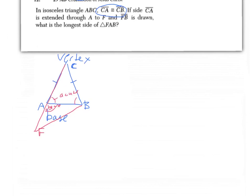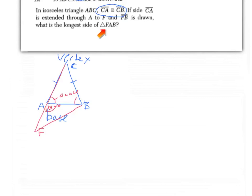That's a tough question because there are no numbers. If you're dealing with an isosceles triangle, the base angles have to be acute — less than 90°. If the base angles are less than 90°, then the angle formed at that extension has to be an obtuse angle. A triangle can't have more than one obtuse angle, so the obtuse angle has to be the largest angle. That should help you figure out the longest side.